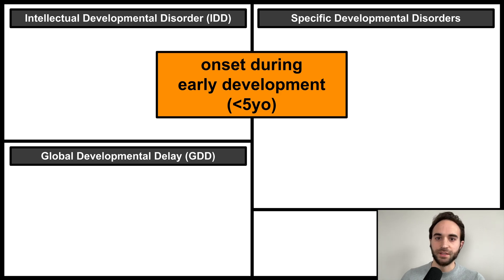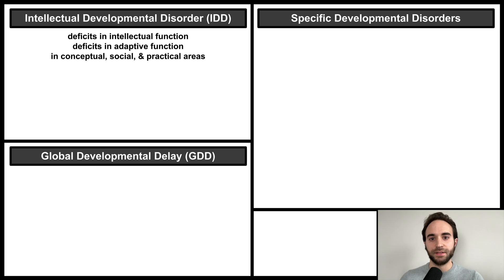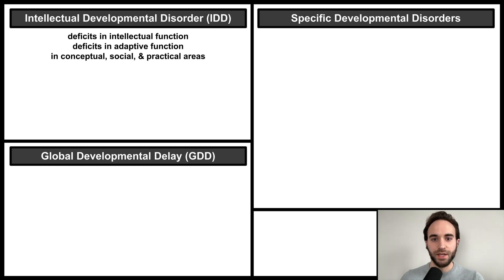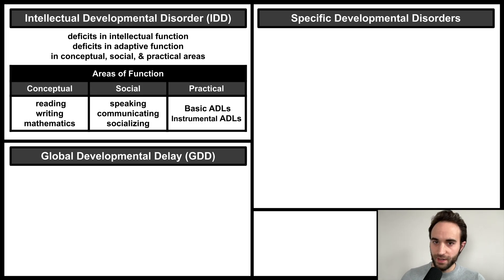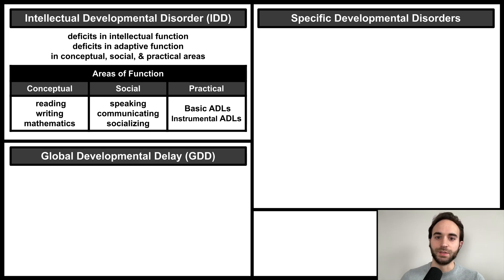Let's start with intellectual developmental disorder. IDD, previously known as intellectual disability, involves deficits in intellectual and adaptive function in the areas of conceptual, social, and practical skills. To make this more concrete, here are some examples of these skills. The conceptual area includes reading, writing, and mathematics.